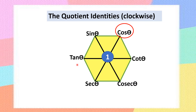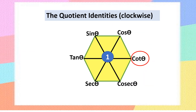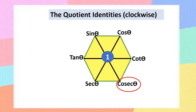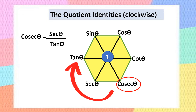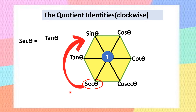Continuing clockwise: cos theta equals cot theta divided by cosecant theta. Cot theta equals cosecant theta divided by secant theta. Cosecant theta equals secant theta divided by tan theta. And secant theta equals tan theta divided by sin theta — bringing us back to tan theta. So using this hexagon in the clockwise direction, you can write all six quotient identity formulas.